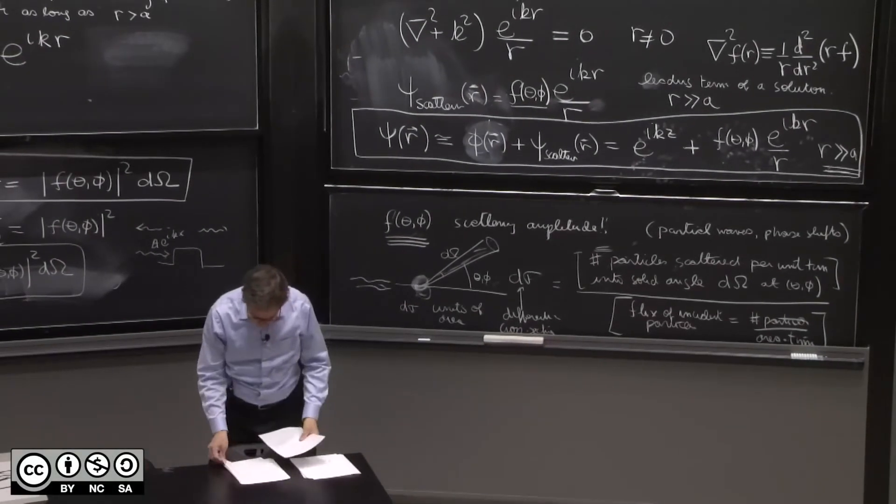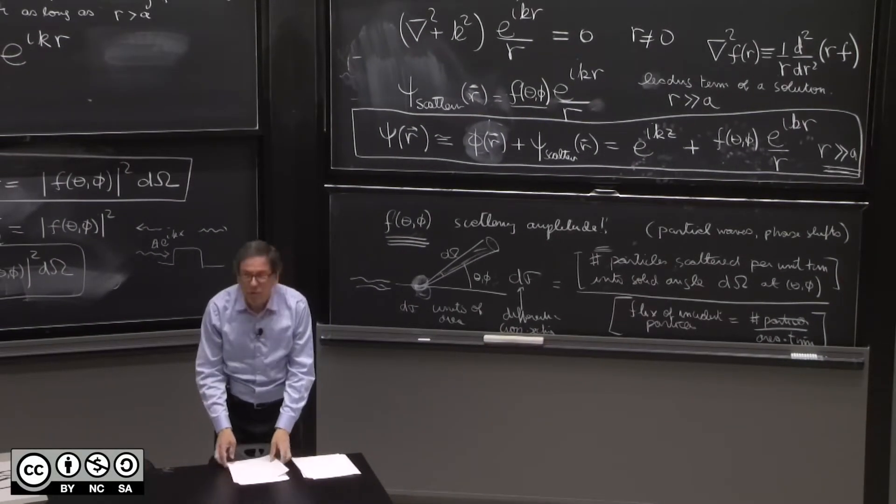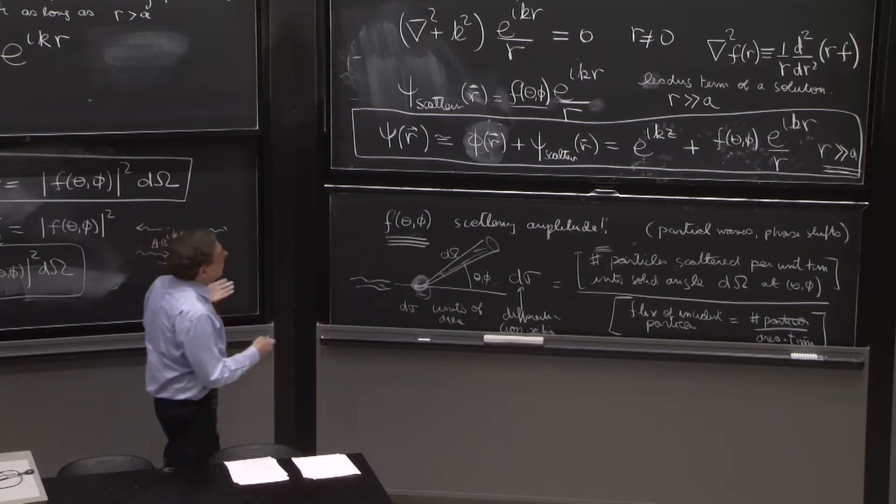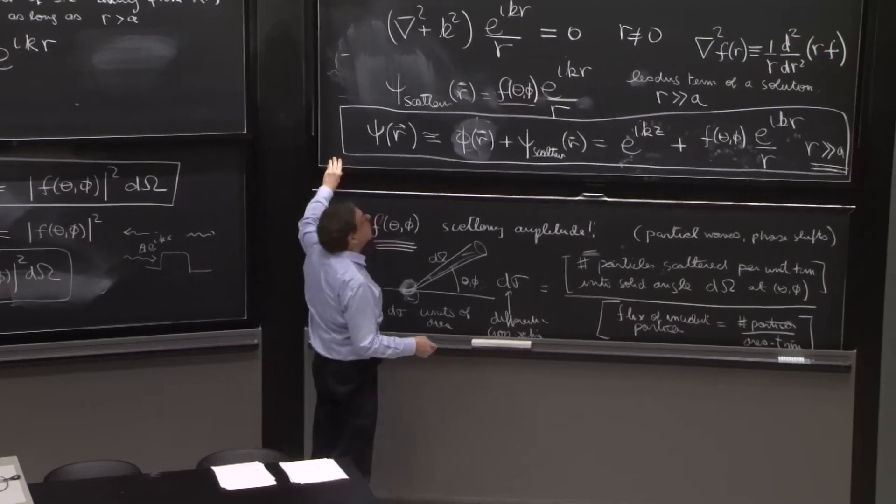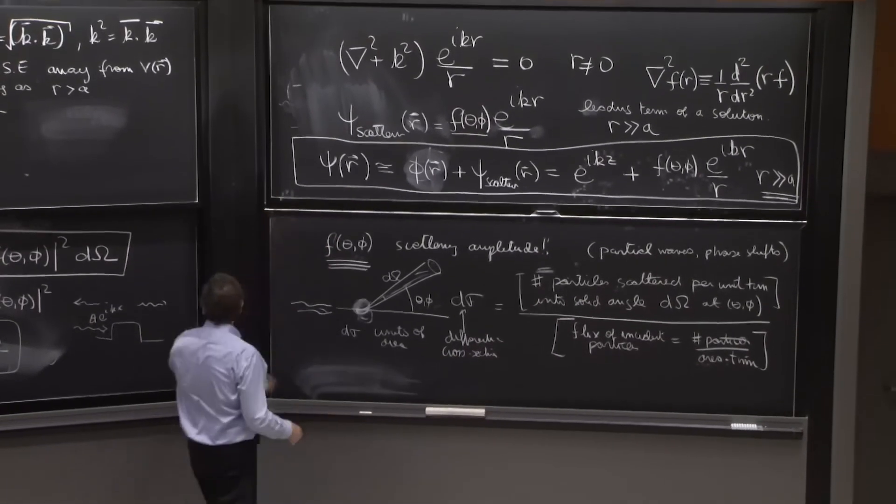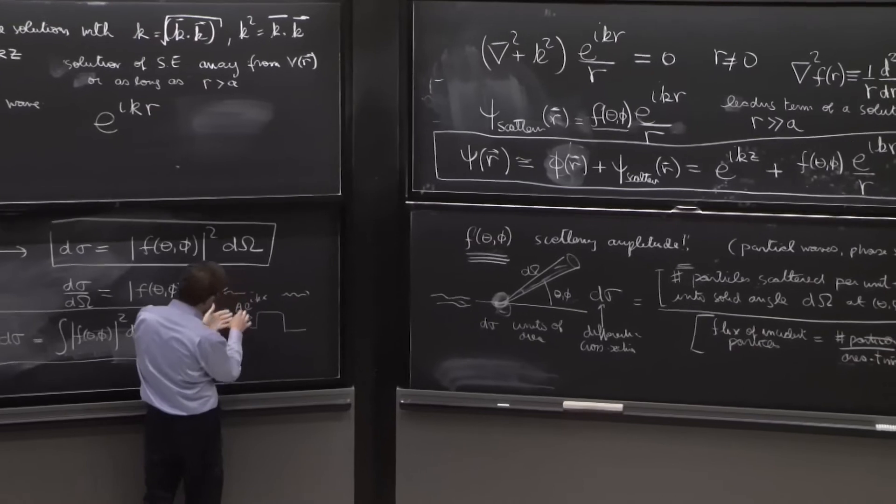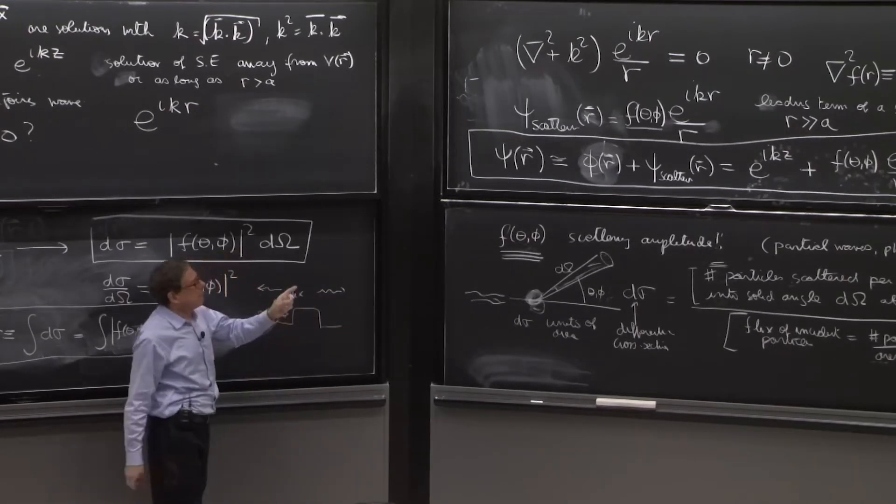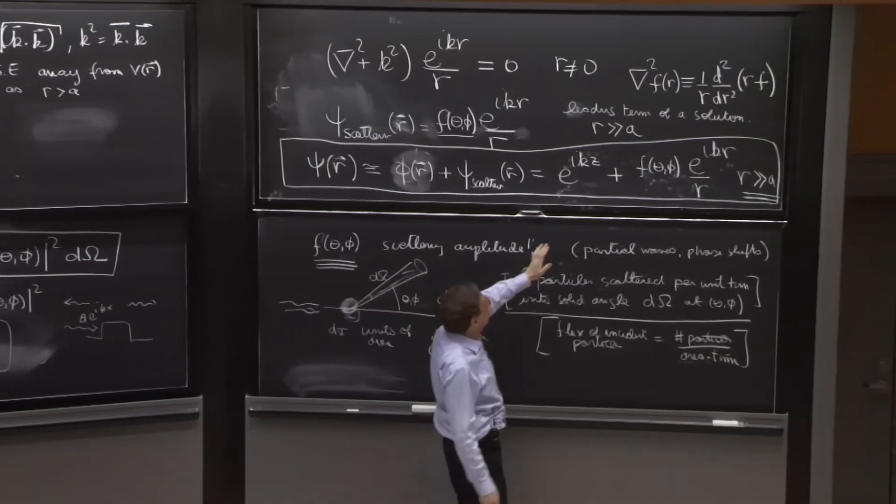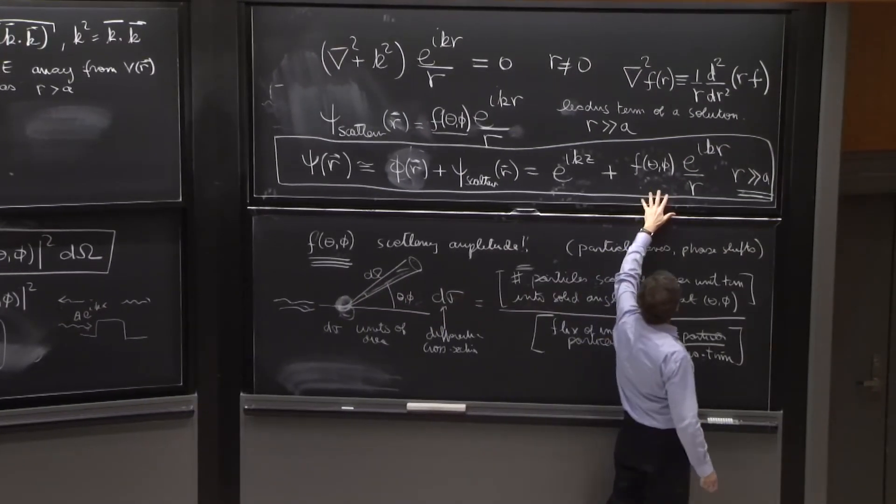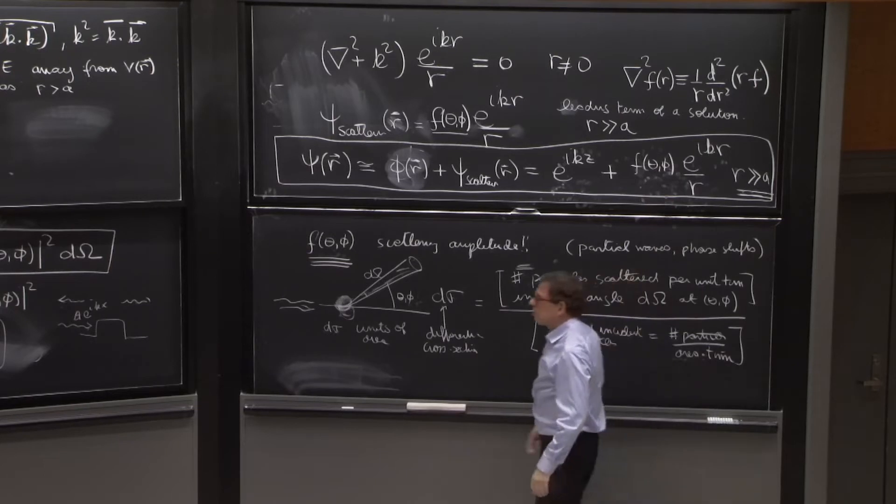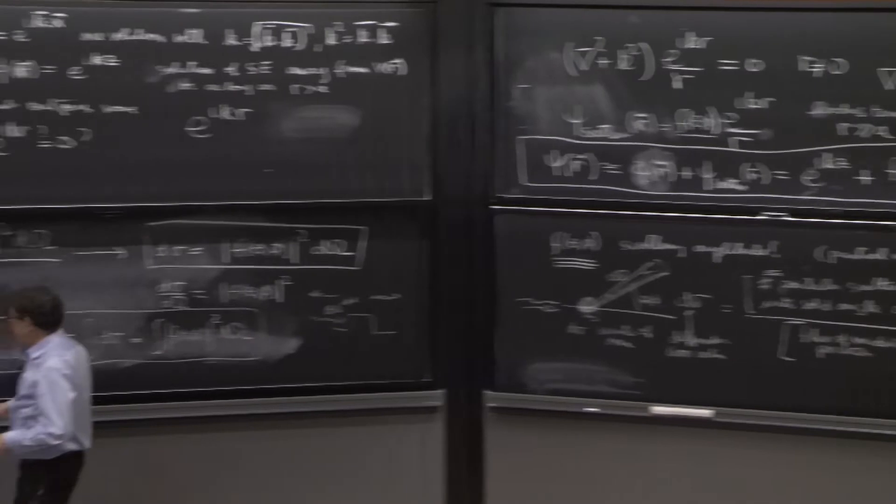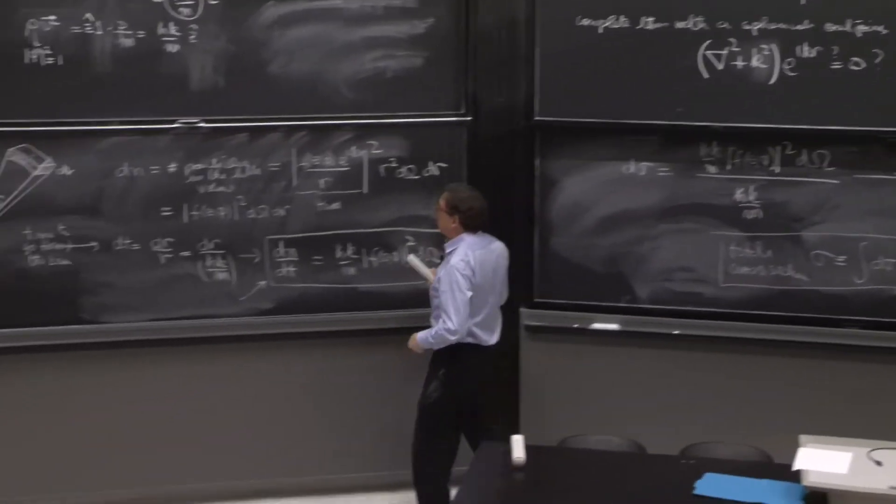So I will begin with phase shifts and do the introduction of how to make sure we can really solve this. This is the important part. Just like when we added the reflected and transmitted wave, we could find the solution. I'm going to try to explain why, with these things, we can find solutions in general. So this is the subject of partial waves.